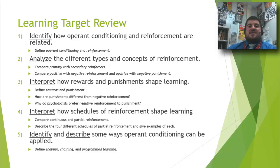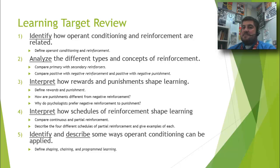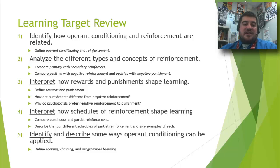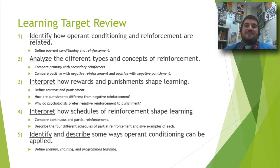Let's review our learning targets. We identified how operant conditioning and reinforcement are related, discussed types of reinforcement — positive, negative, primary, and secondary — and interpreted how rewards and punishments shape learning. We talked about how different schedules of reinforcement shape learning and how operant conditioning can be applied. I'll leave you to review, and when you come back, we will talk about cognitive factors in learning. Have a great night.